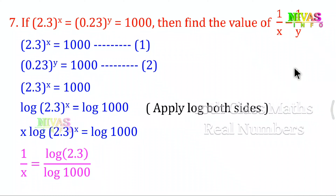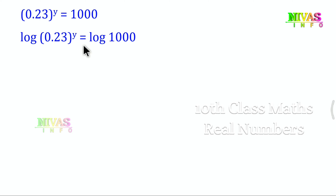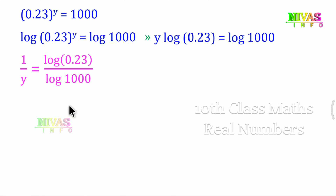Now for 1 by y: 0.23 to the power y is equal to 1000. Applying log: log(0.23) to the power y equals log 1000. Bringing the exponent down: y into log 0.23 equals log 1000. So 1 by y is equal to log 0.23 by log 1000.